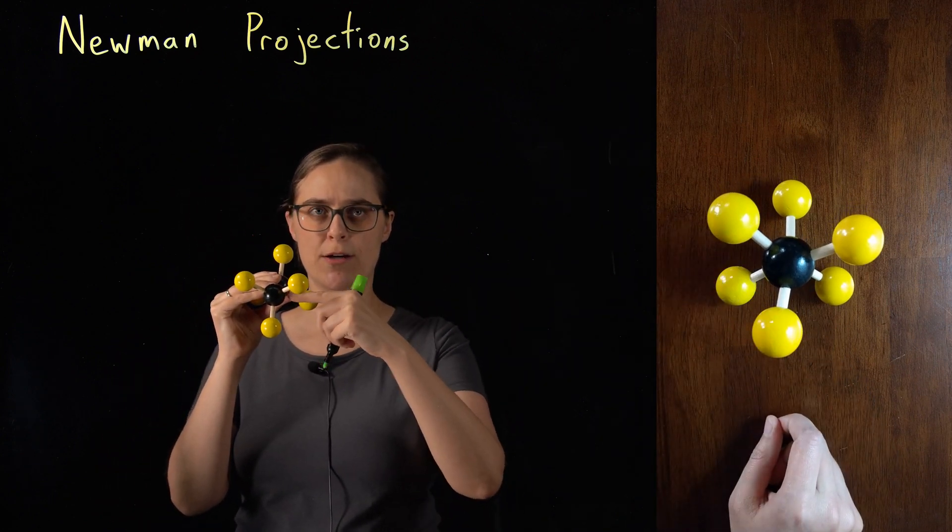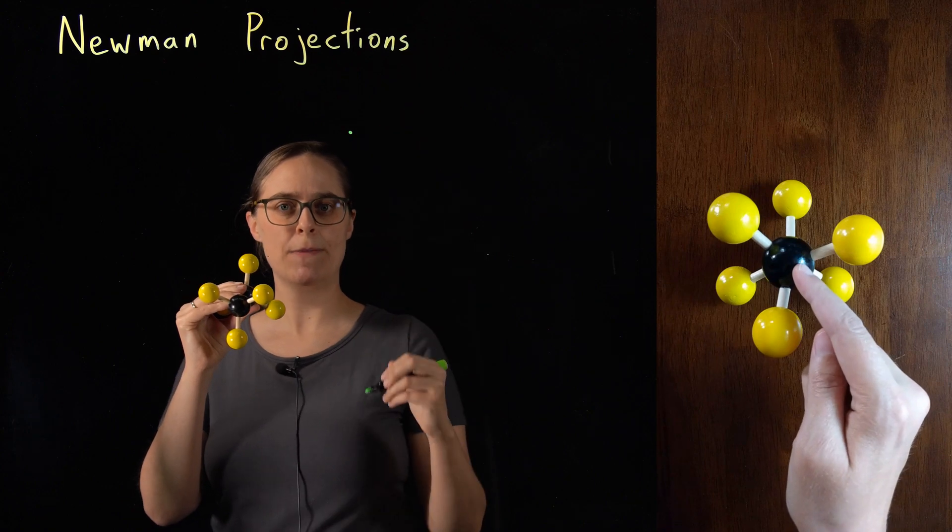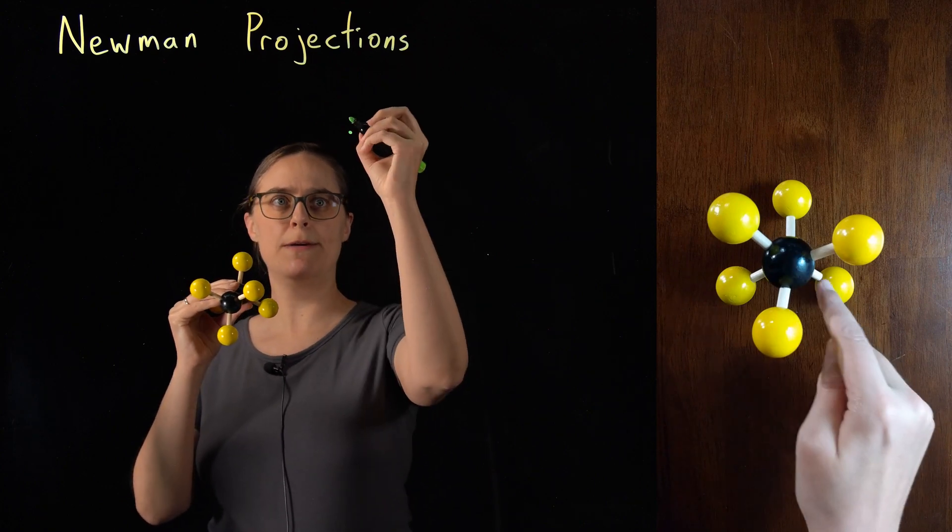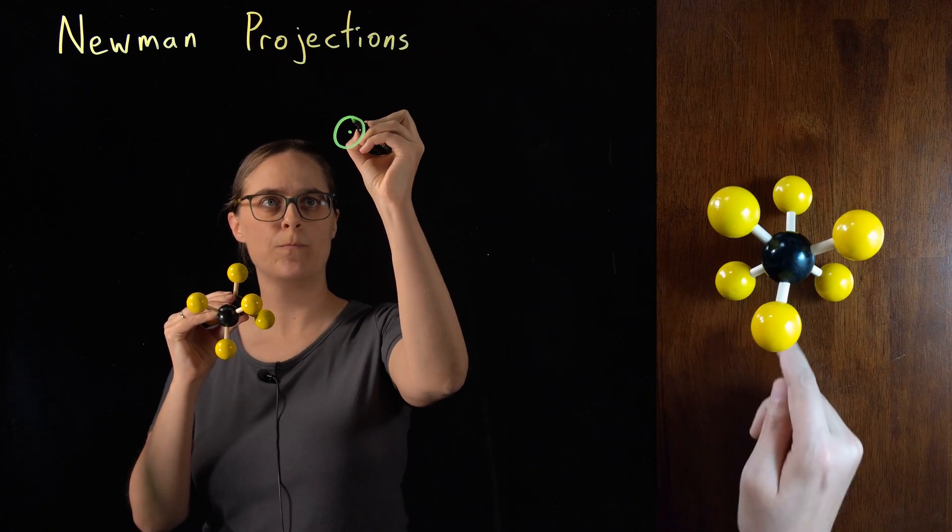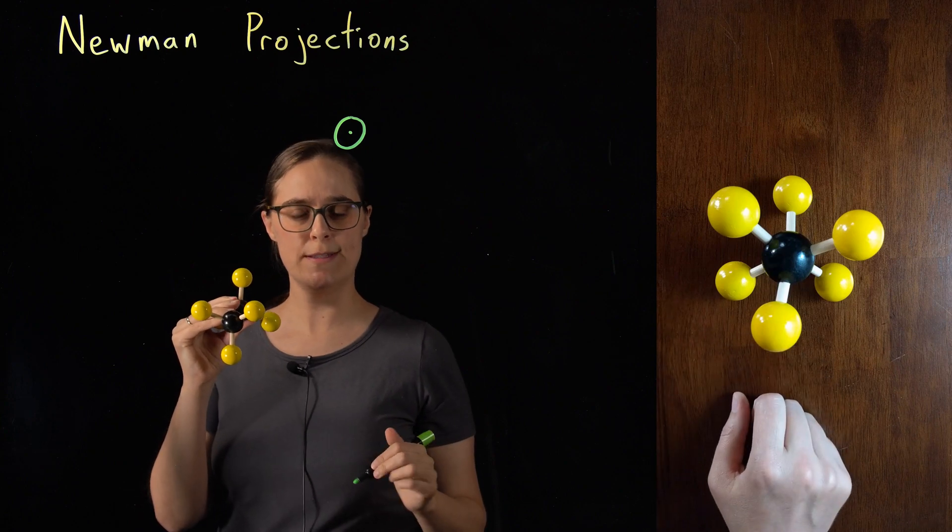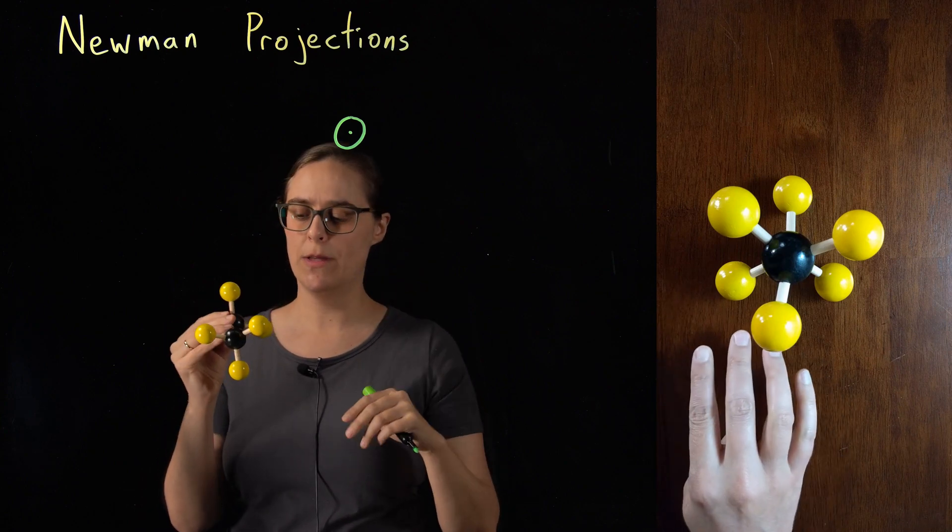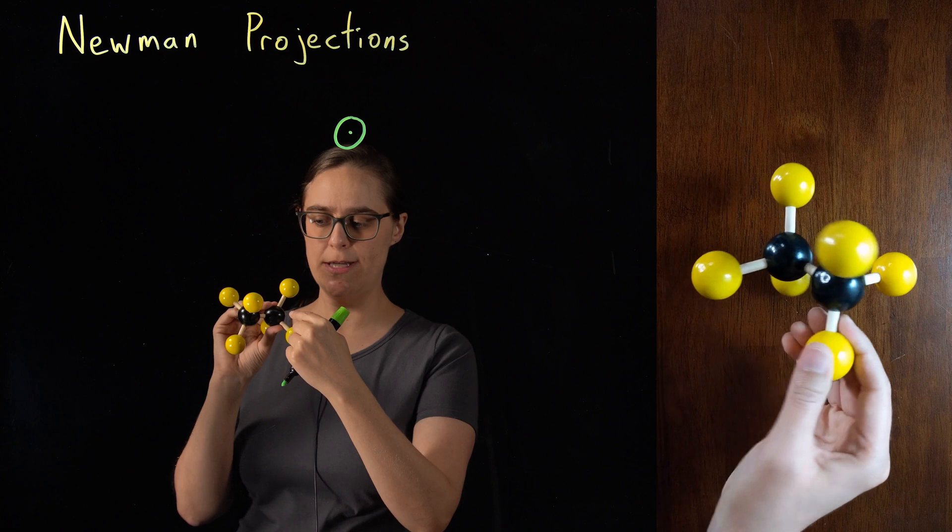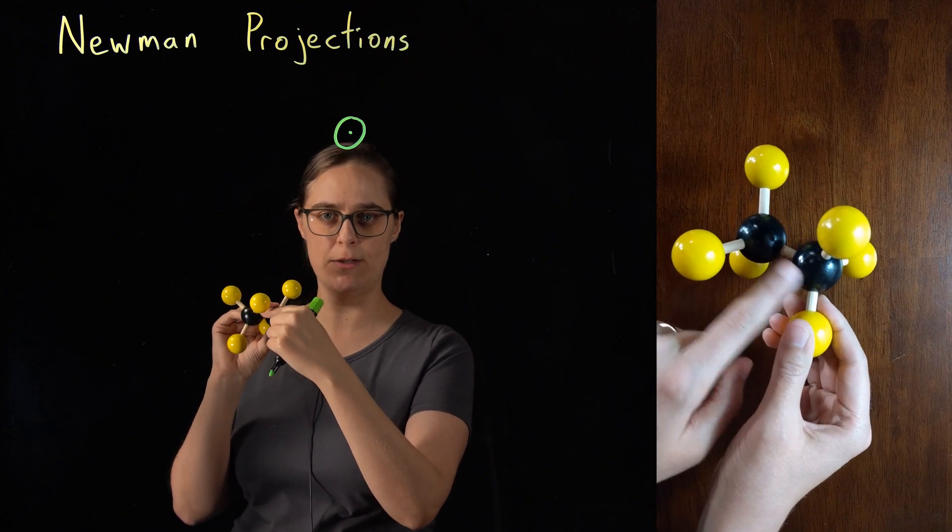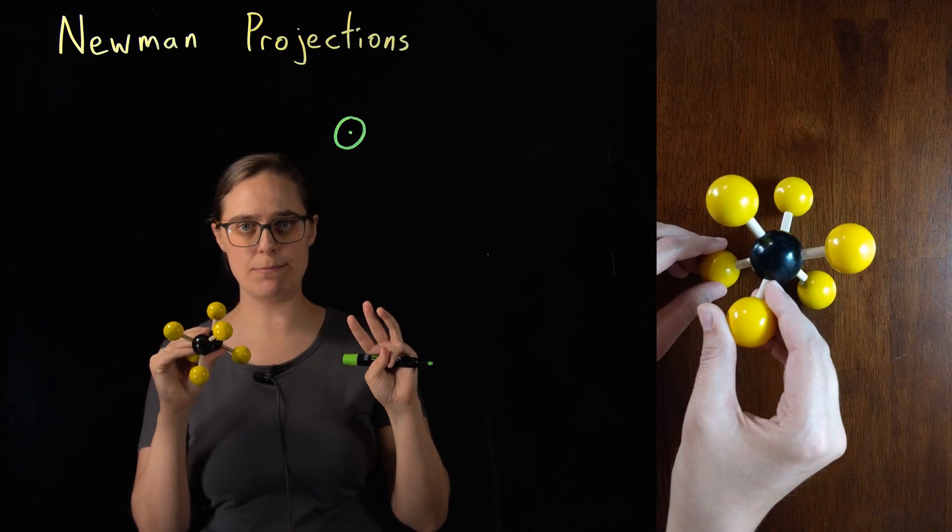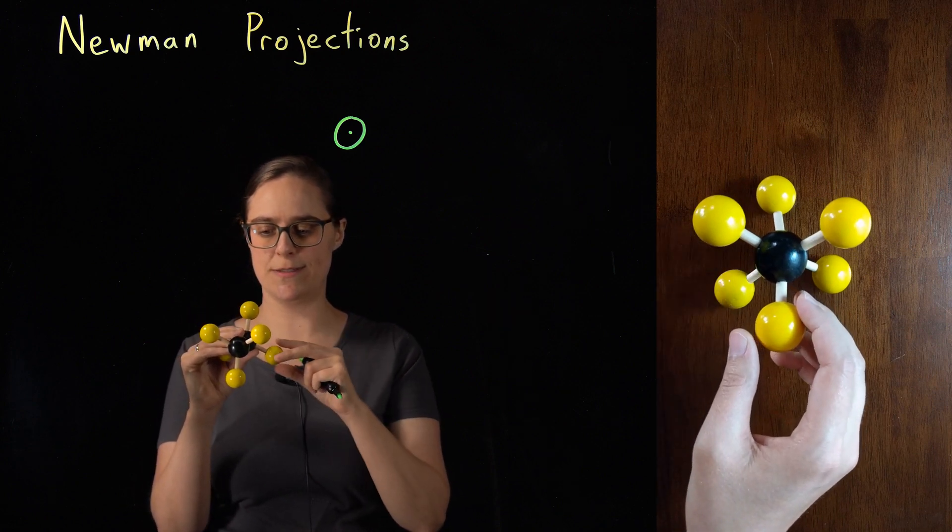We are going to represent the carbon in the front as a dot. We're going to represent the carbon in the back as a circle. Now, carbons like to have a total of four bonds. One of those bonds on each of these carbons is the bond between them. So I need to draw the other three bonds on each of these carbons.